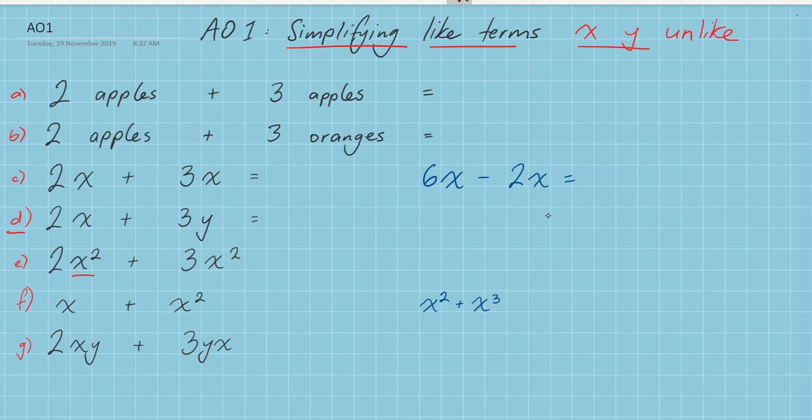All right, so let's have a look at a real world example. In this example, I've got a pile of two apples and I've got a pile of three apples. Can I simplify that? Can I make it into one big giant pile? The answer in this case is yes, because I'm dealing with like terms. So I'm going to add them together to make a pile of five apples.